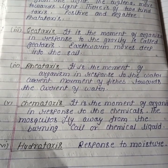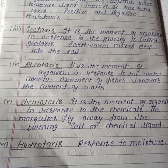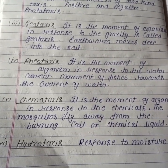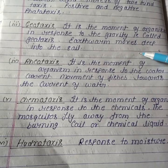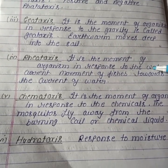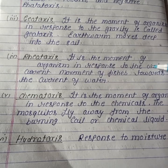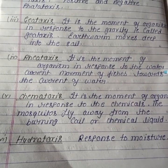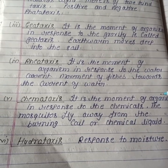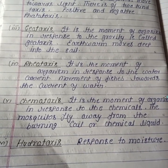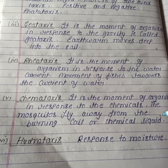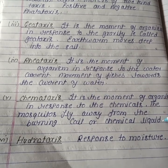Third is geotaxis: the movement of an organism in response to gravity. For example, the earthworm moves deep into the soil. Fourth is rheotaxis: the movement of an organism in response to water current, such as the movement of fish towards the current of water. Fifth is chemotaxis: the movement of an organism in response to chemicals. For example, mosquitoes fly away from a burning coil or chemical liquid.